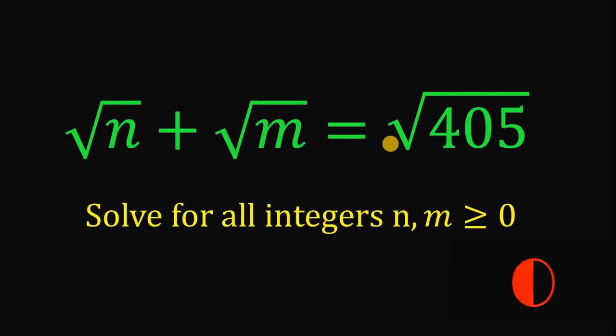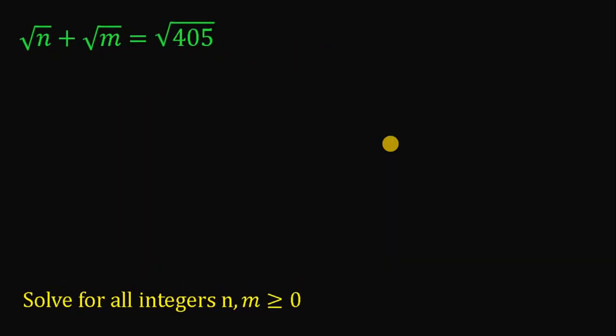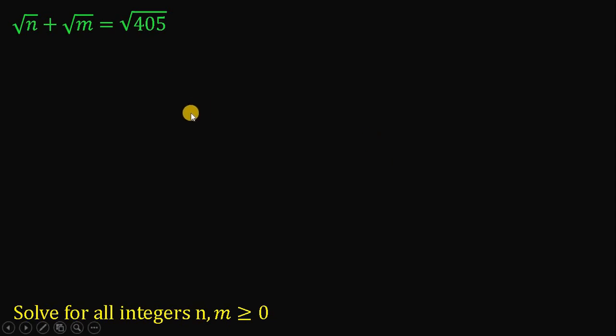Now, let's answer this question together. Our given is square root of n plus square root of m equals square root of 405. And our goal is to solve for all integers n, m that is greater than or equal to 0.